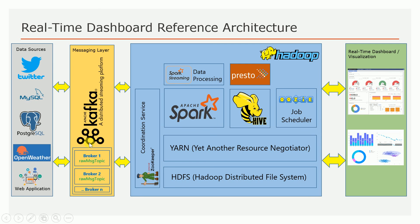Once the data comes to the Kafka topic in the distributed messaging system, you can read data from this Kafka topic and do a lot of processing based on your project requirement. I kept minimal processing in our project. The idea is to show you end-to-end project development using Apache Spark and Apache Hadoop components. We use the Spark Streaming component, which underlying uses the Spark Core APIs.